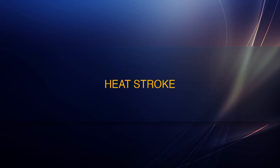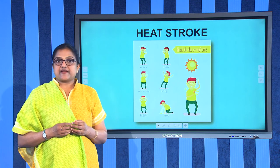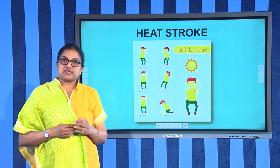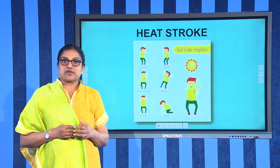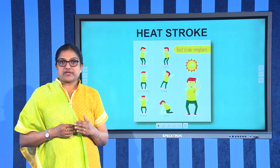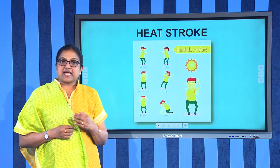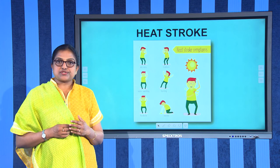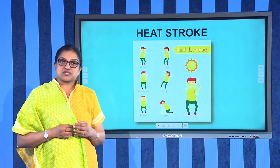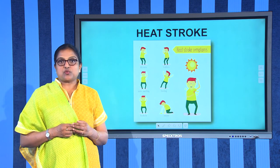Next, we shall discuss heat stroke. This happens when the body is unable to control its temperature by sweating, and can occur in hot, humid weather when there is no wind. Symptoms include restlessness, headache, dizziness, flushed hot dry skin, fast strong pulse, and a temperature of 40 degrees Celsius or more.